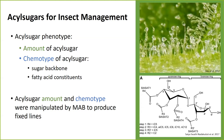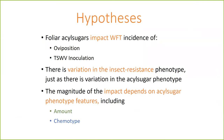Luckily for me, Martha and John had recently created a number of inbred tomato lines that varied both the amount and chemotype in tomato, which allowed me to test a few hypotheses. I wanted to know: do foliar acyl sugars impact thrips oviposition rates and tospovirus inoculation rates? If so, is there variation for that insect-resistant phenotype, just as there's variation for the acyl sugar plant phenotype? And can some of that variation be attributed to the amount of acyl sugar, the chemotype, or some combination of both?